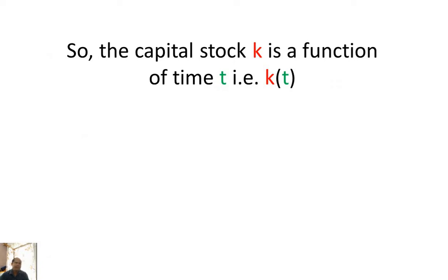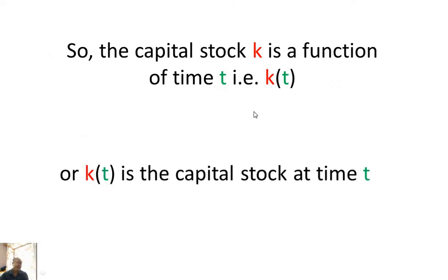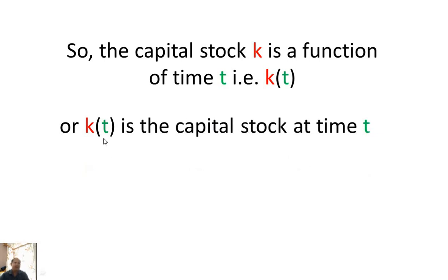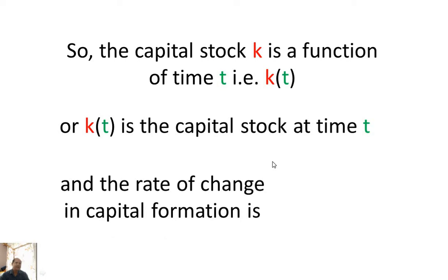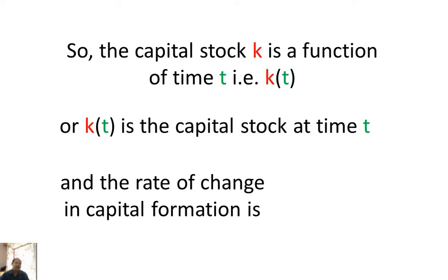The capital stock k is a function of time t, or k(t) is the capital stock at time t. The rate of change in capital formation is dk/dt — that is, the derivative value of capital stock over time is the rate of change in capital formation.